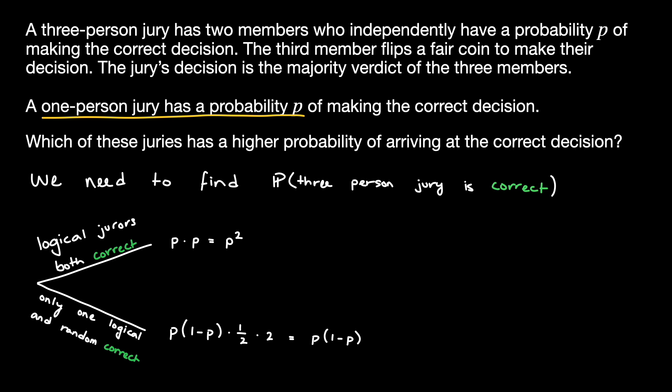Now, we can notice that both of these branches are for mutually exclusive events. Thus, the total probability that the three-person jury is correct is the summation of these probabilities. Working this out and simplifying, we see that this solves for P. Thus, the probability that the three-person jury makes a correct decision is simply P, which is the same as the probability that the one-person jury makes a correct decision.